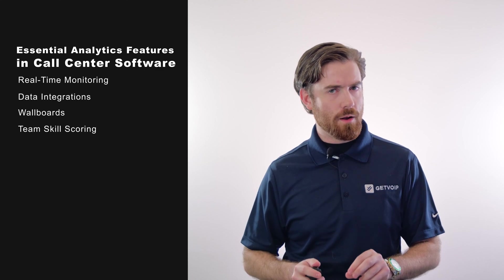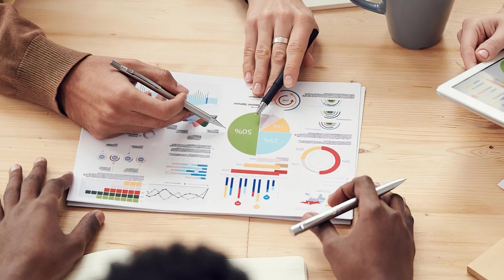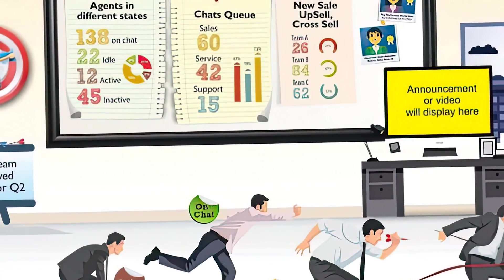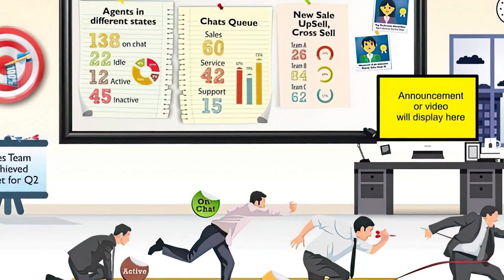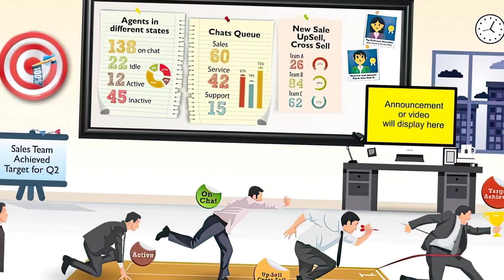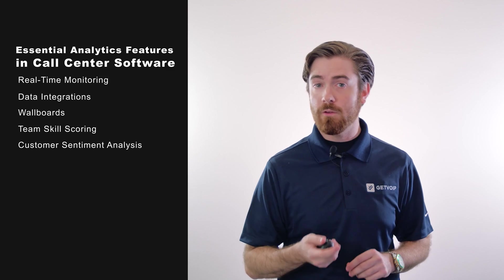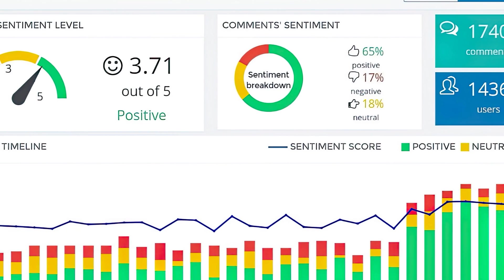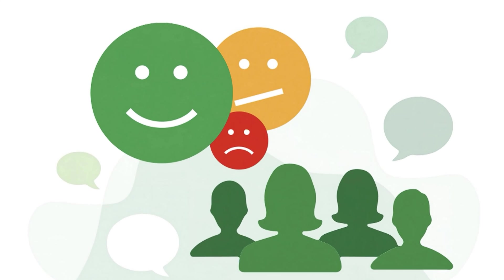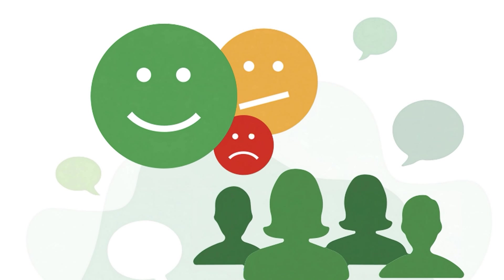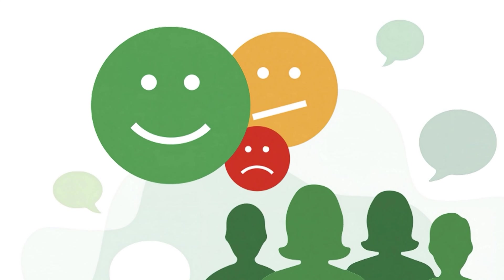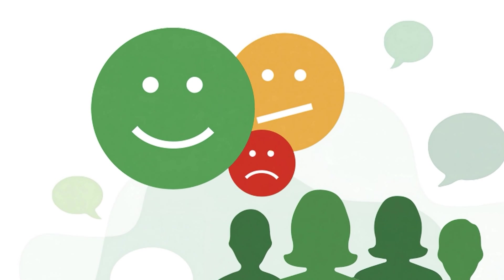Team skill scoring enables a business to score each team member on their performance to evaluate agent and current training material strengths and weaknesses. Customer sentiment analysis scores each customer interaction as positive or negative by analyzing certain keywords and phrases used by either the customer or rep over the course of a conversation.